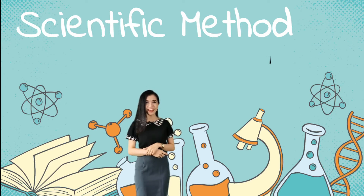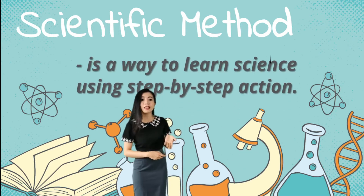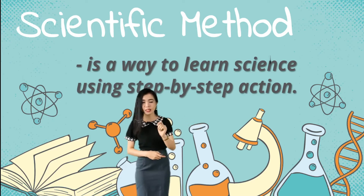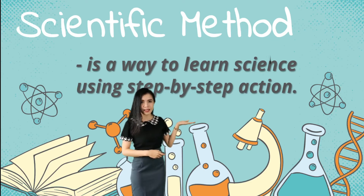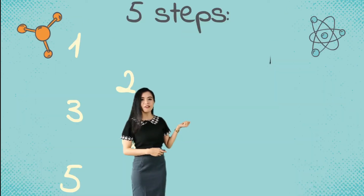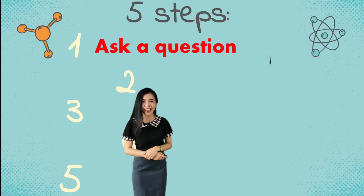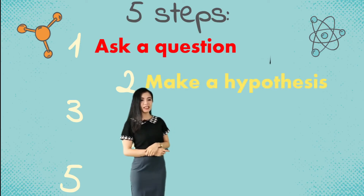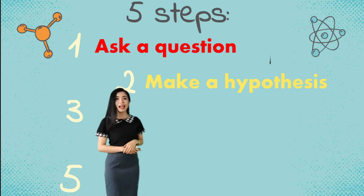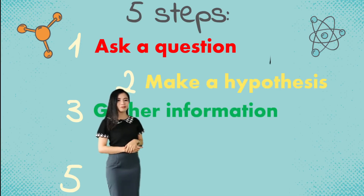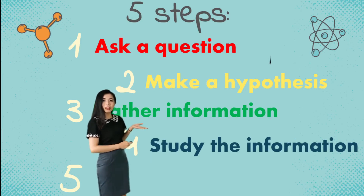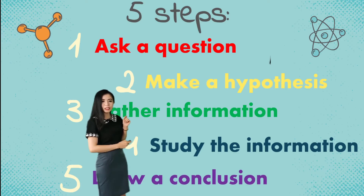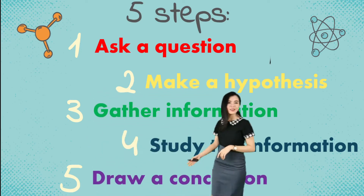What is the scientific method? It is a way to learn science using a step-by-step action. The scientific method has five simple steps: the first step is ask a question, the second step is make a hypothesis, the third is gather information, the fourth is study the information, and the final step is draw a conclusion.